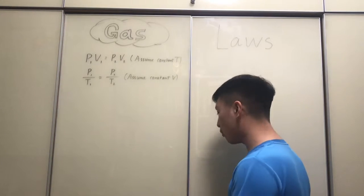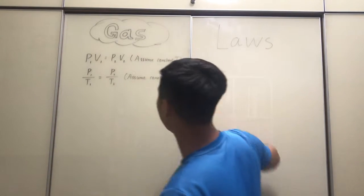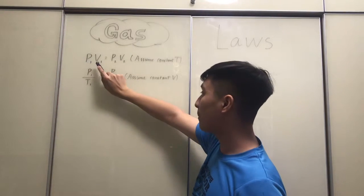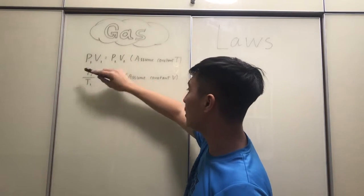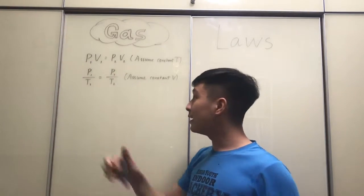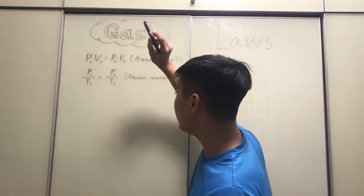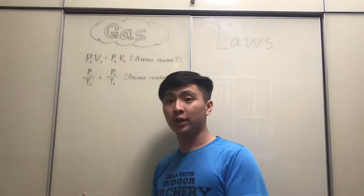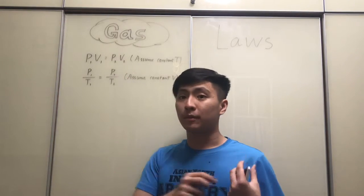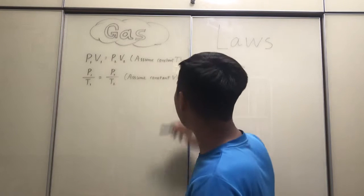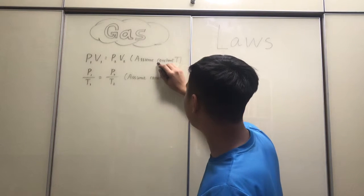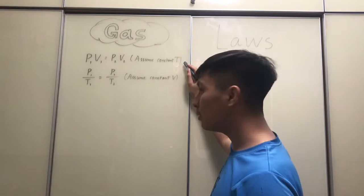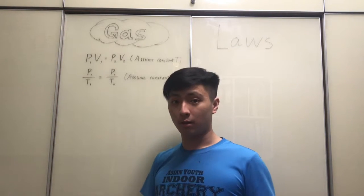If you remember from IGCSE physics, you probably would have seen these equations before. So pressure of a gas multiplied by its volume is equivalent to the changed pressure of a gas when its volume is changed, or the volume of the gas when its pressure has changed. And this is under the assumption that there's a constant value of temperature. You would know this as Boyle's law.